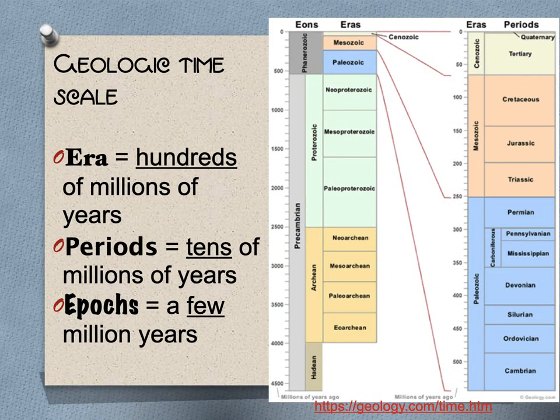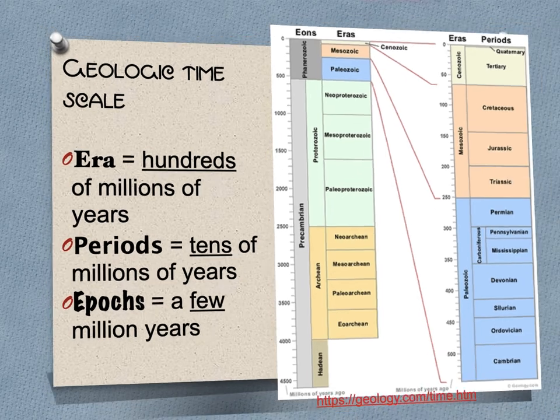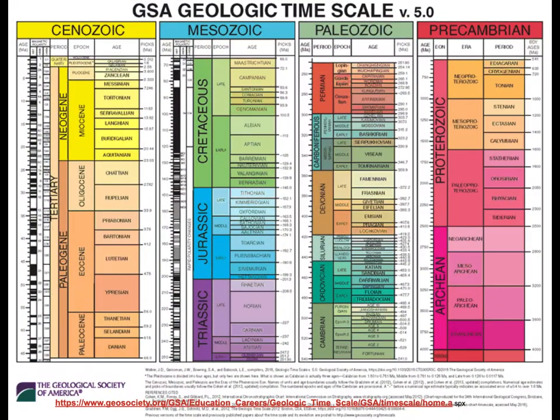Geologic time scales are broken up by geologists. You need to know that an era is hundreds of millions of years, a period is tens of millions of years, and an epoch is a few million years. Here is the actual geologic timescale from the Geologic Society of America — a whole lot of things to memorize, so we're not going to memorize it, but realize it's there.